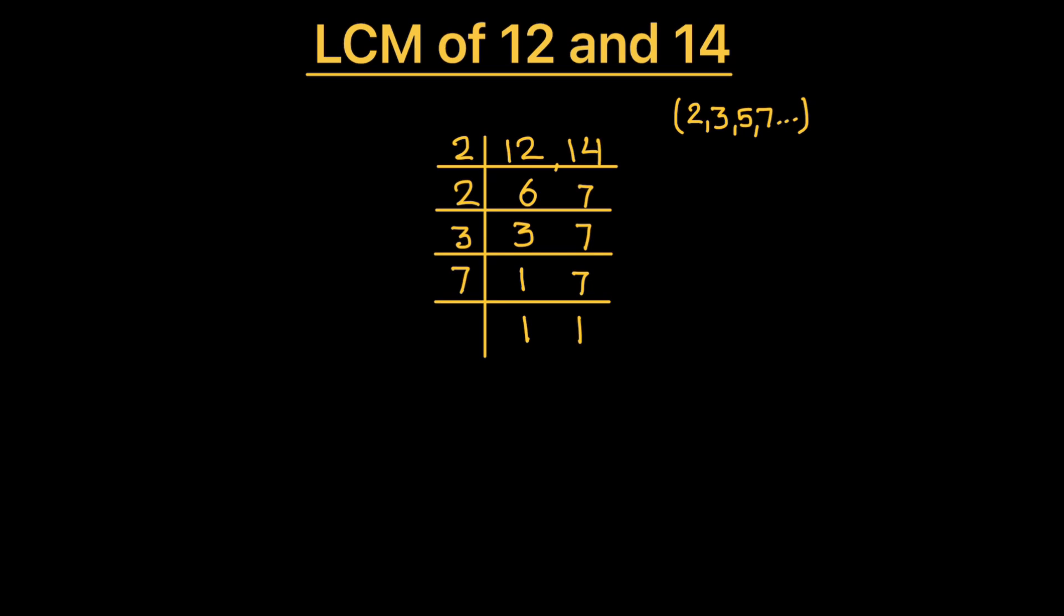Now to find the LCM of the two numbers, we are going to take the product of all the numbers which are on the left-hand side of the ladder. So 2 times 2 times 3 times 7 will be the LCM of the two numbers.